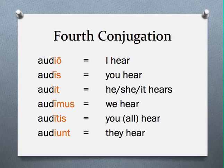Similarly to the third conjugation, you have I as your theme vowel, but here notice that the I's are long, except as expected in the third singular and third plural. Also note that in the first singular and third plural, the I creeps in before your expected ending. So instead of O, it's IO, and instead of UNT, it's IUNT.